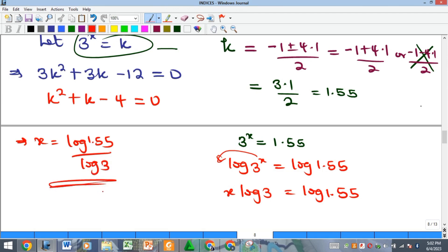And what is the log of 1.55? It is 0.1903, all over the log of 3, which is 0.4771. And if you divide this, you will get approximately 0.4 to 1 decimal place, and that is the value of our x. Okay, so this is where we end it for this video.